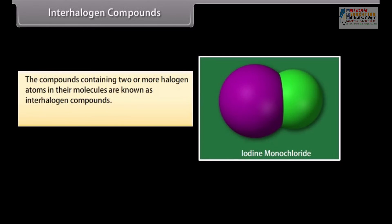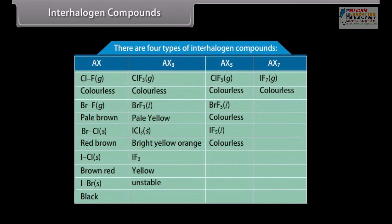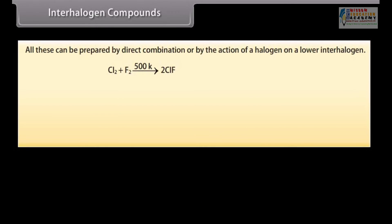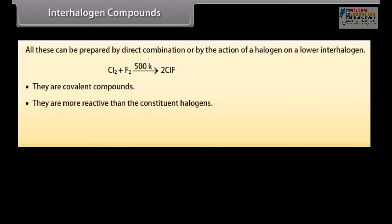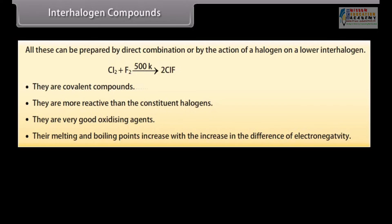The compounds containing two or more halogen atoms in their molecules are known as interhalogen compounds. Their general formula is AXₙ, where A is the less electronegative halogen, X is the more electronegative halogen, and N is its number. The oxidation state of halogen A may be +1, +3, +5 and +7. Therefore there are four types: AX, AX₃, AX₅ and AX₇. All can be prepared by direct combination or by the action of a halogen on a lower interhalogen. They are covalent compounds, more reactive than the constituent halogens, and very good oxidizing agents. Their melting and boiling points increase with the increase in the difference of electronegativity.